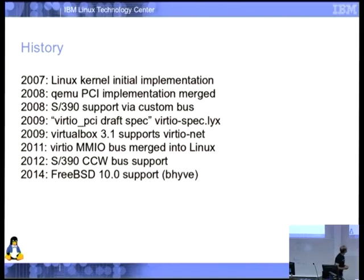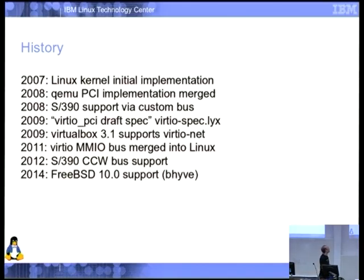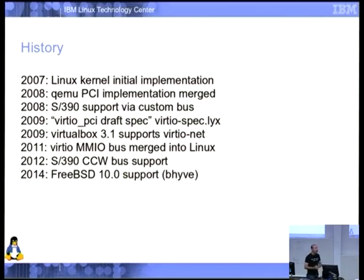Things rolled along for a few years. In 2011 we got the MMIO bus merged into Linux — that's the embedded bus where you don't have PCI, just a few descriptors describing what devices you have. The year after, the S390 people figured that the really crappy implementation they had copied from Lguest was a terrible idea, and came up with a real bus — the CCW bus support, which is much more S390-like. So much so that I have trouble reading that part of the spec, but it has S390-like words in there.